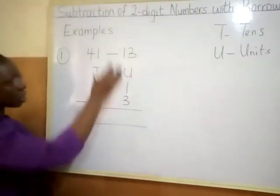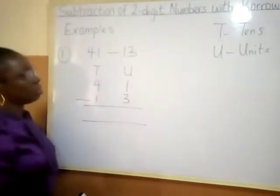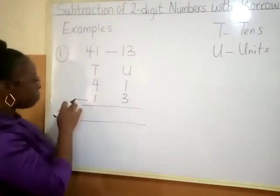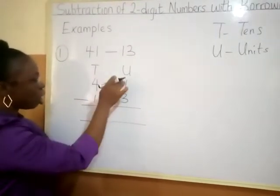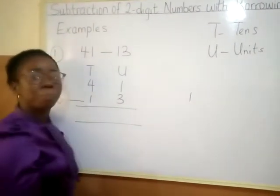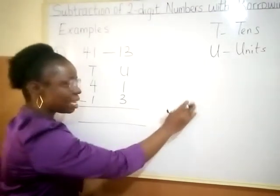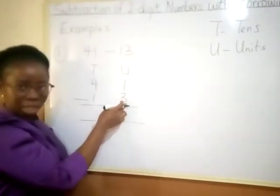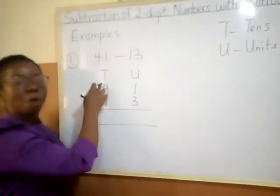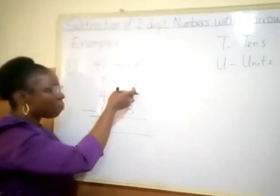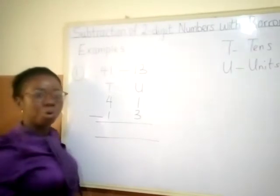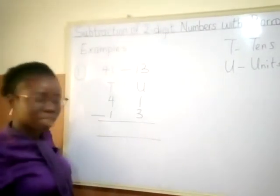Now we start the subtraction from the unit side. In units, I have one minus three. If I have to count one and take away three, it is impossible. Why? One is smaller than three. What do I need to do? I will come to this four in tens. I will borrow. Whenever there is a small number on top and a bigger number below, what you need to do is to borrow for you to be able to subtract it.